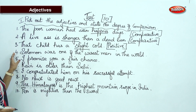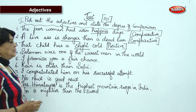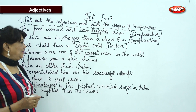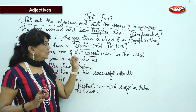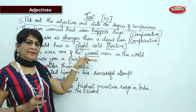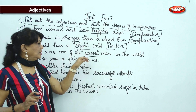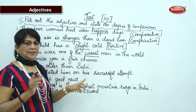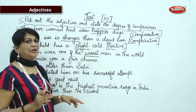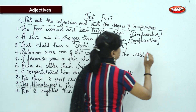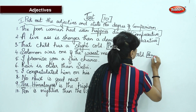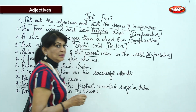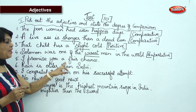'Solomon was one of the wisest men in the world.' Wisest has -EST, so what degree is it? It is superlative degree. Always remember: before the superlative degree you have the word 'the' — the article or determiner. The wisest, the ugliest, the longest — this is superlative degree.